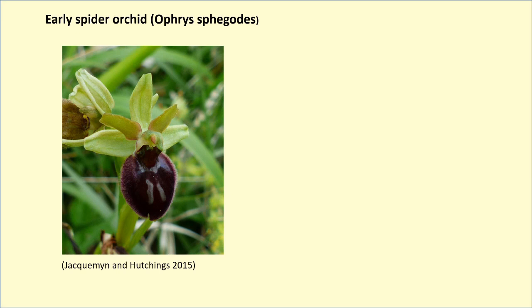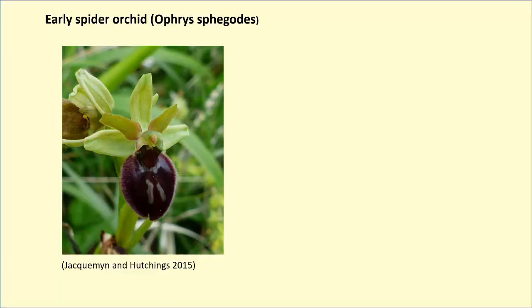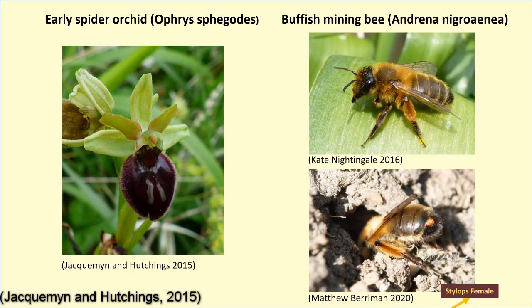These parasites can be a cause for concern for wildflower meadows in these areas, as andrenid bees are major orchid and blossom pollinators, most of which are endangered and have an exclusive relationship with their andrenid bee. An example of this exclusive relationship can be seen between the early spider orchid, also known as Ophrys sphegodes, and their exclusive pollinator, the buffish mining bee, Andrena nigroaenea.